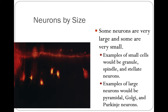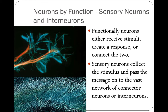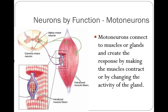Some neurons are very large and some are very small. Examples of small cells would be granule, spindle, and stellate neurons. Examples of large neurons would be pyramidal cells, Golgi cells, and Purkinje neurons. Functionally, neurons either receive stimuli, create a response, or connect the two. Sensory neurons collect the stimulus and pass the message on to the vast network of interneurons. Motor neurons connect to muscles or glands and create the response by making muscles contract or by changing the activity of the gland.